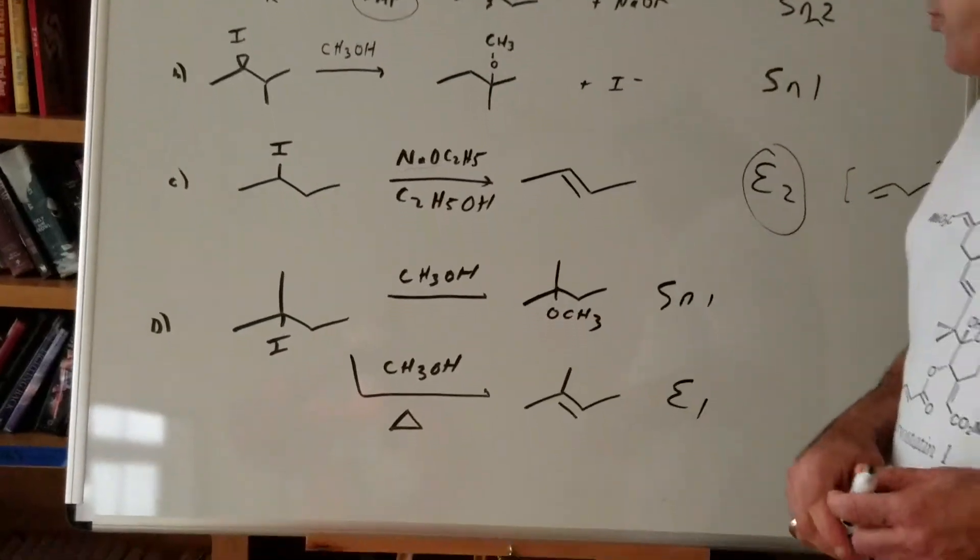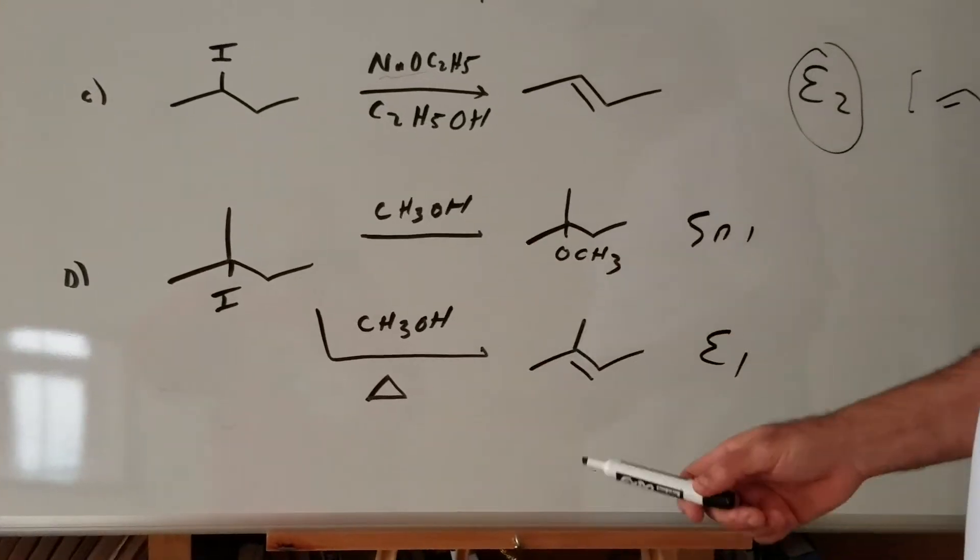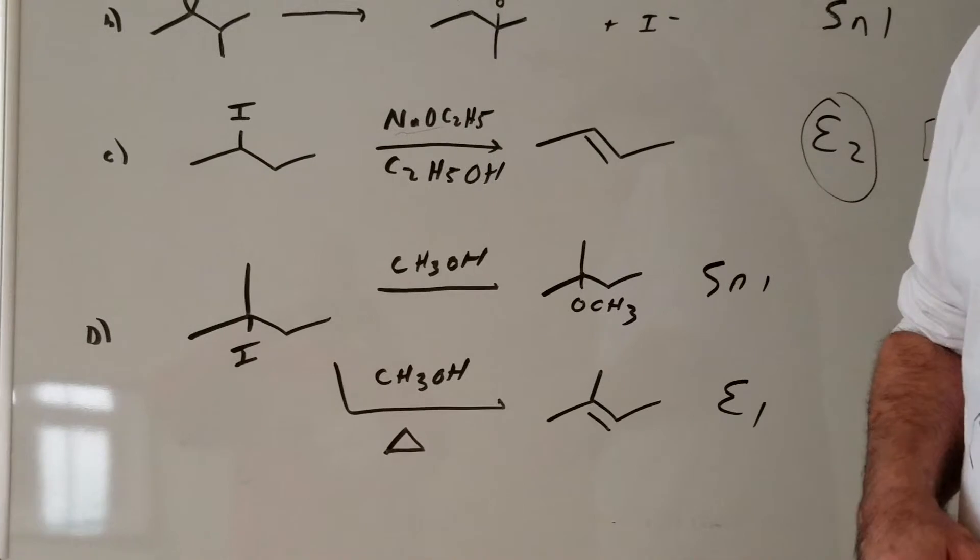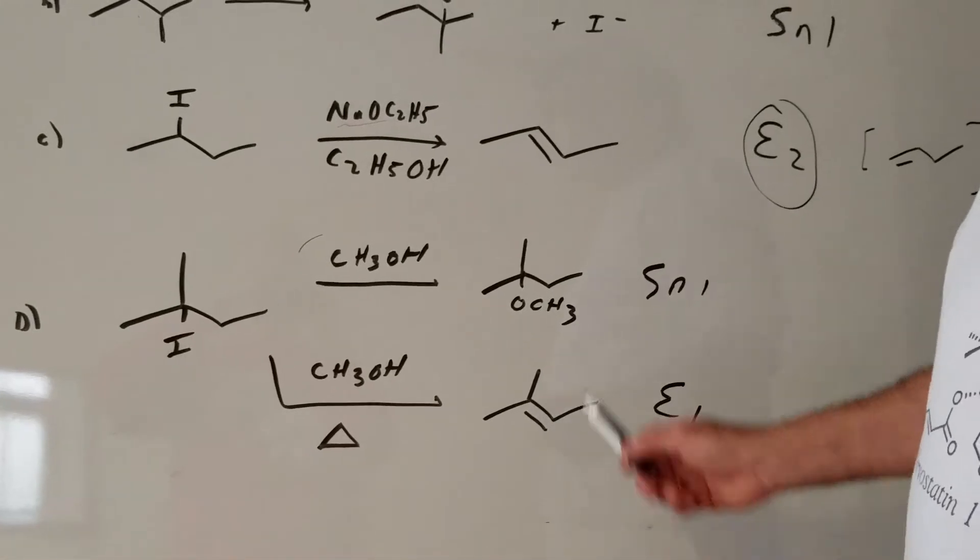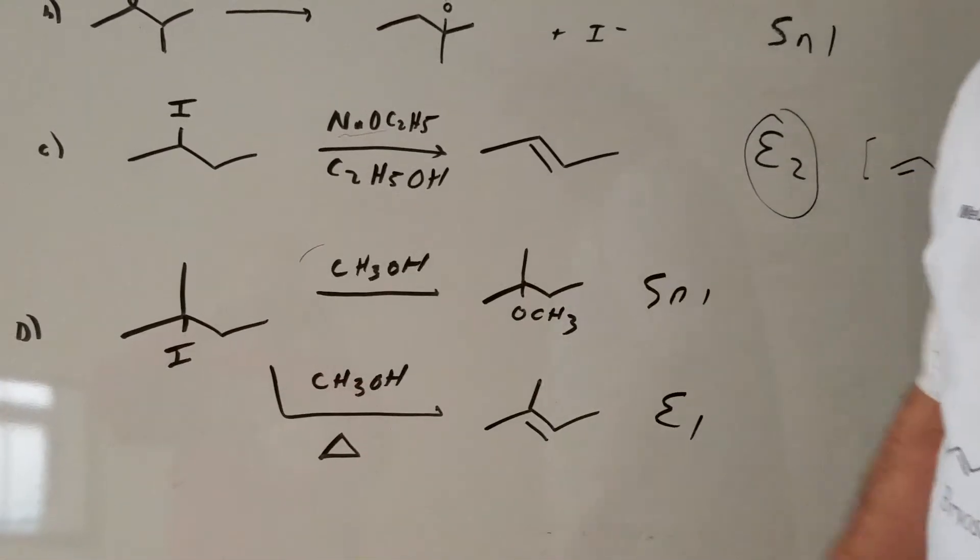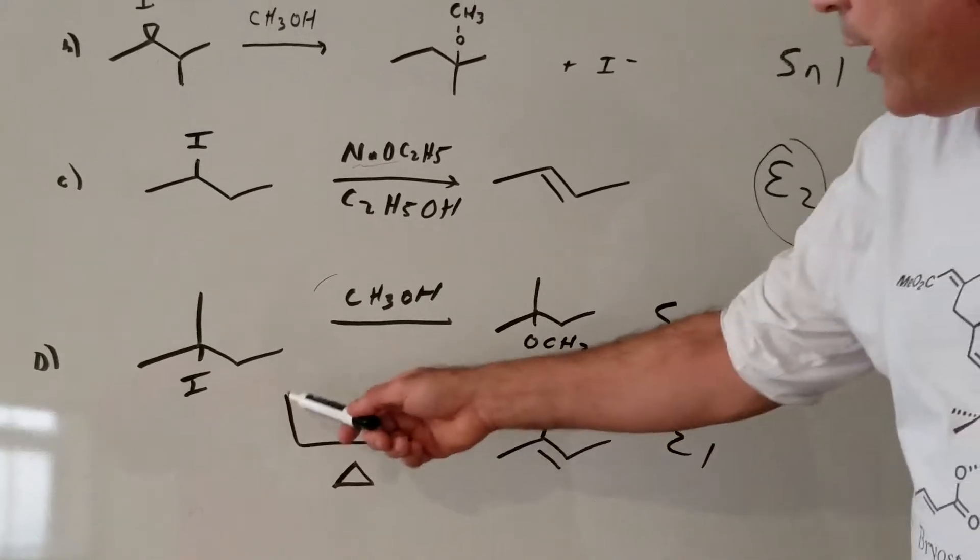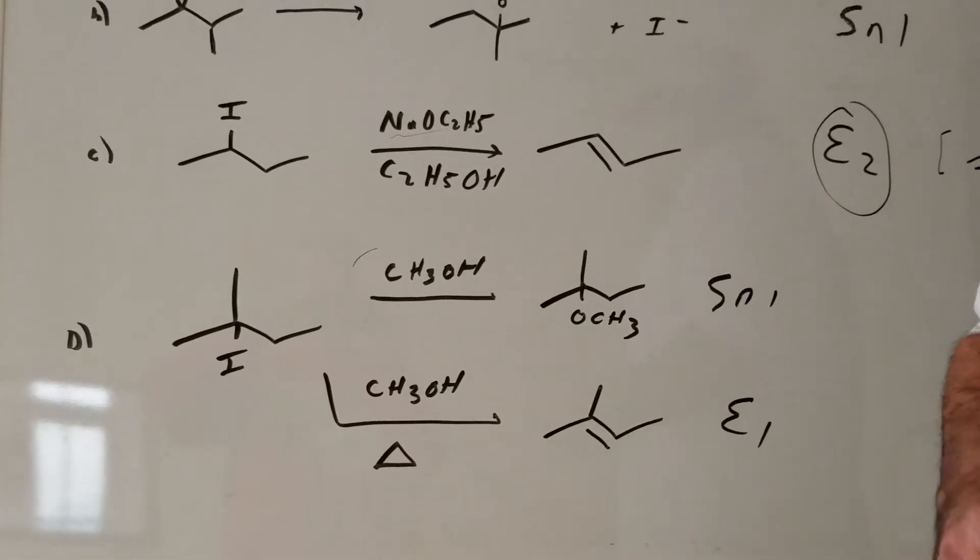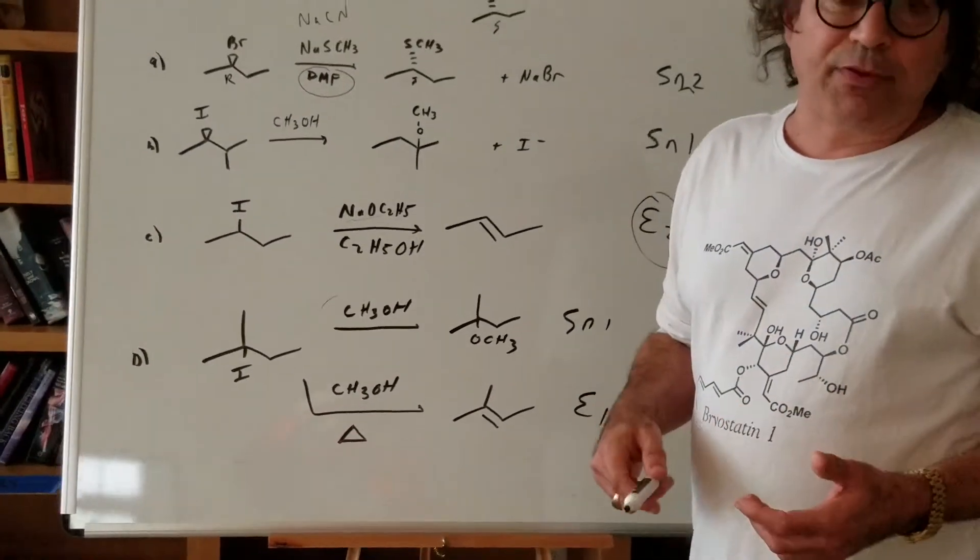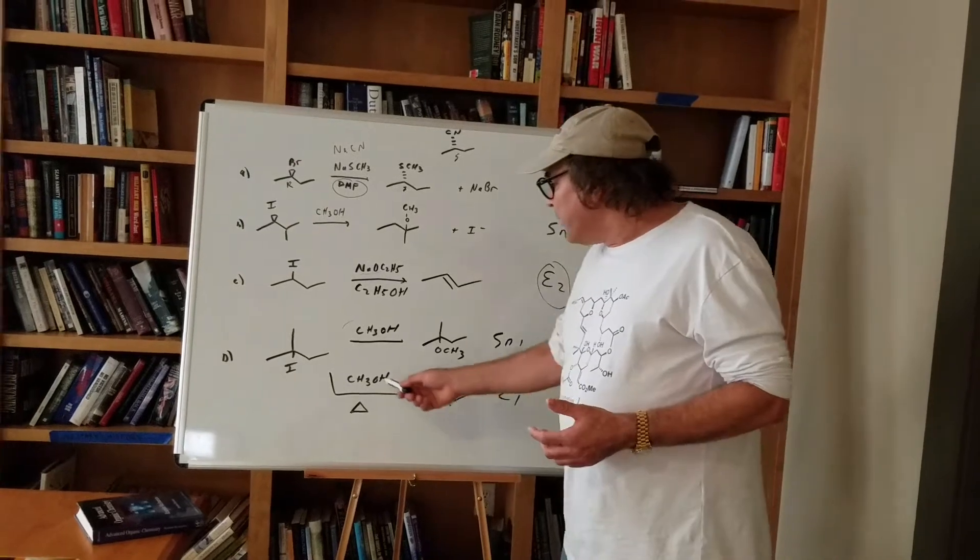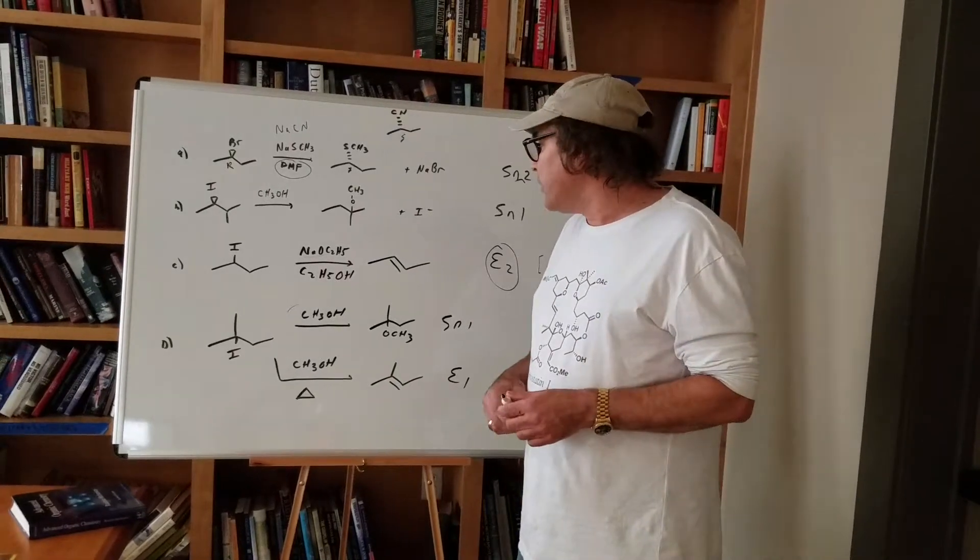And finally, the last one, we have a tertiary. Now you've got to be very careful when you see a tertiary, because tertiary can either do SN1 or E1. In this example, a tertiary, I give you methanol, which is a weak nucleophile, is going to go SN1. You form a carbocation, you do the attack, and you form an SN1. Here, you do an E1 because it's a tertiary, but you put heat underneath it. Anytime you put heat underneath it, you would have a competition between SN1 and E1. And E1 almost always wins if you've got a tertiary with heat.